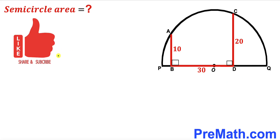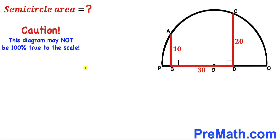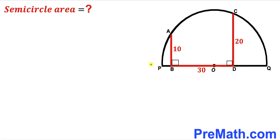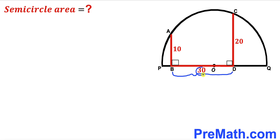Please don't forget to give a thumbs up and subscribe, and keep in mind that this figure may not be 100% true to scale. To calculate the area of this semicircle, we first need to calculate the radius, which I'll label as lowercase r. We can see that the full horizontal segment BD has length 30 units.